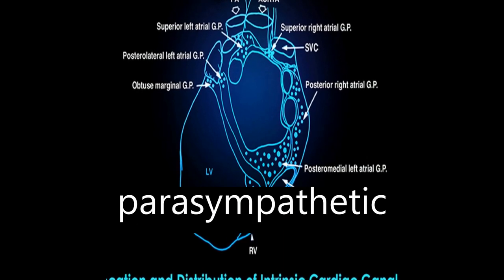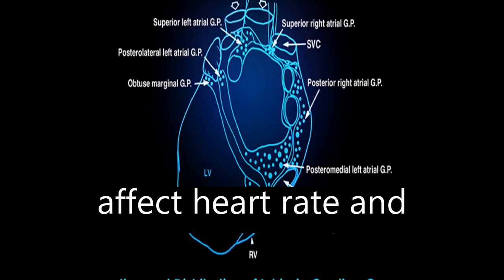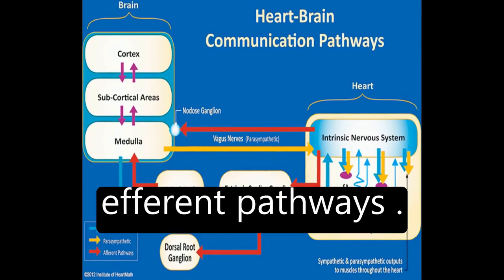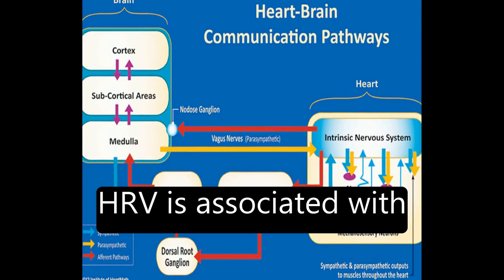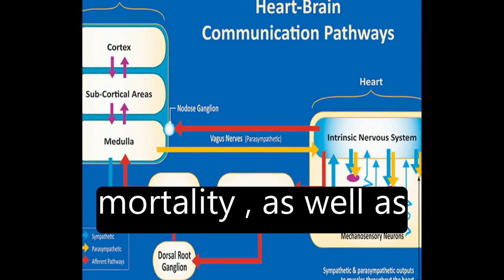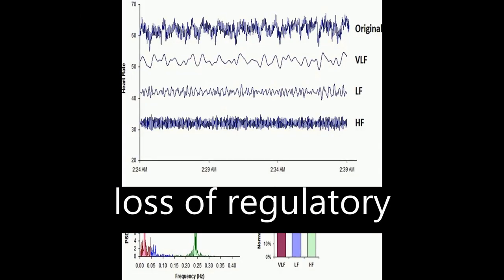Sympathetic and parasympathetic influences on the heart affect heart rate and blood pressure through efferent pathways. HRV is associated with risk of disease and mortality, as well as loss of regulatory capacity.